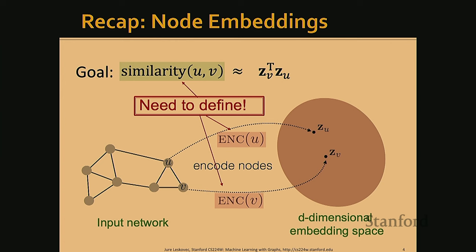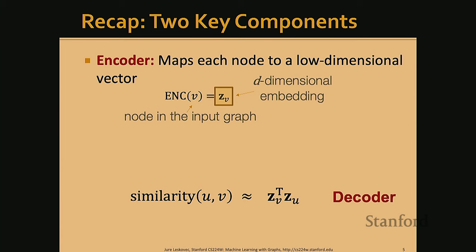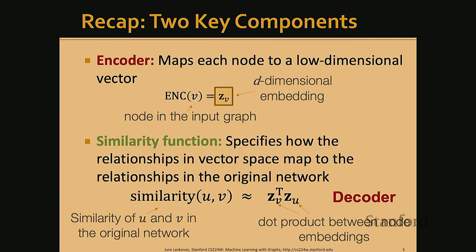We need to define two things: a similarity function that represents how close two nodes are in the network, and an encoder function that maps nodes from the graph into the embedding space. We have an encoder that maps nodes to embeddings and a decoder that defines the similarity function. Last lecture we discussed random walk-based similarity — for example, if two nodes co-occur on a short random walk, we consider them similar.